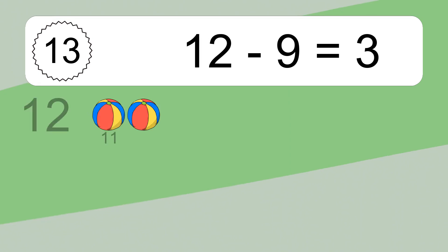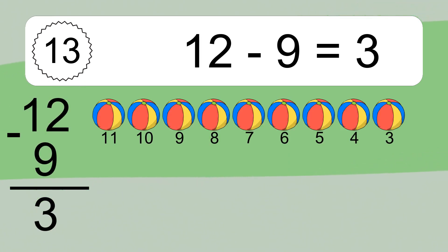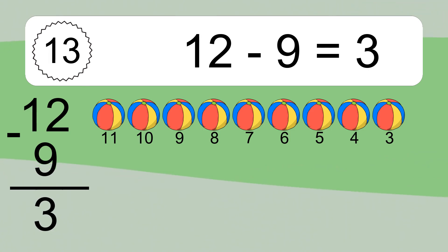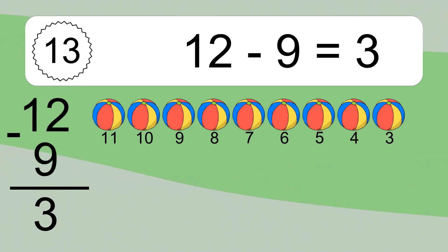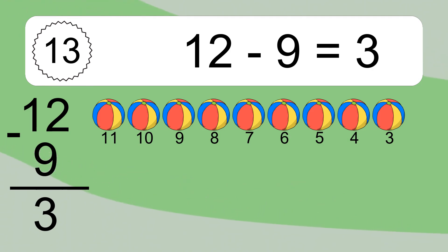12 minus 9 equals 3. Let's count it: 11, 10, 9, 8, 7, 6, 5, 4, 3.